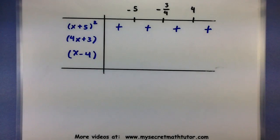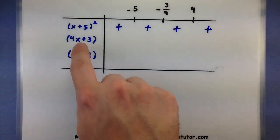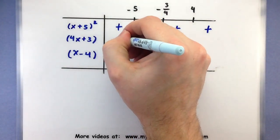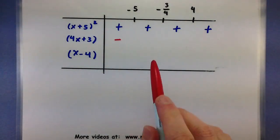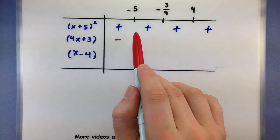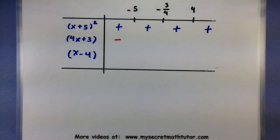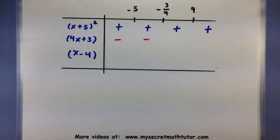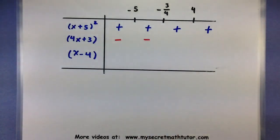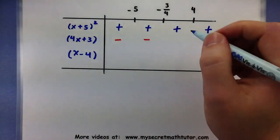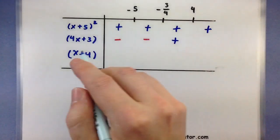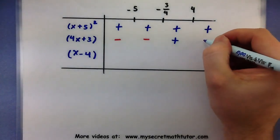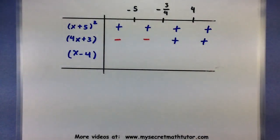For 4x plus 3: putting in negative 6 gives a negative result. Something between negative 5 and negative 3 quarters — try negative 1 — still negative. Something between negative 3 quarters and 4, maybe 0: 4 times 0 plus 3 is a positive 3, so positive. And something larger than 4 — definitely positive.